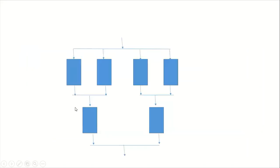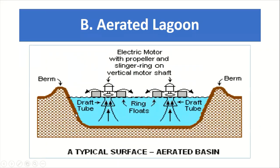The next part is the aerated lagoon. The aerated lagoon and oxidation pond are somewhat the same, but the difference is that an electric motor is placed at the bottom of the wastewater to produce continuous air circulation. A pictorial diagram shows an electric motor fitted at the bottom of the aerated lagoon.